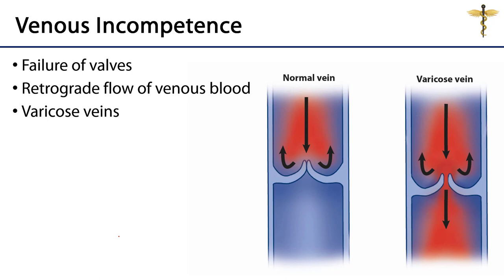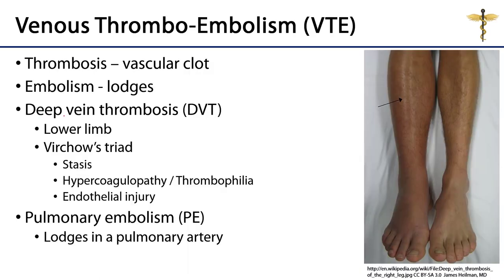From time to time, valves in veins can fail. Here is a healthy typical valve, and here is an example of valvular incompetence where the leaflets fail to approximate and blood can flow in reverse. When this happens, the veins become dilated or varicose. These varicosities can sometimes be seen in the superficial veins of the limbs. For some individuals this is merely a cosmetic concern and rarely poses any clinical threat.